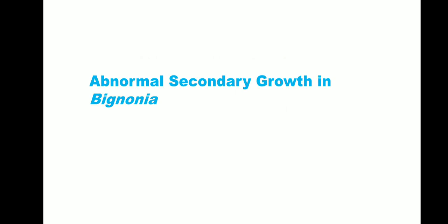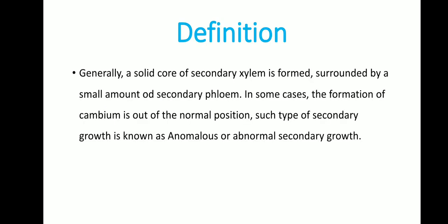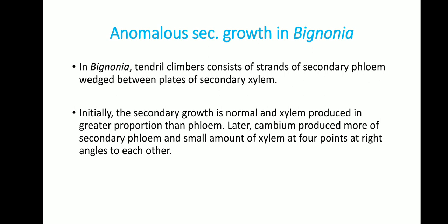Now we will see the abnormal secondary growth. We take a transverse section of Bignonia, which is a dicot plant where secondary growth is abnormal, also called anomalous secondary growth. Generally, a solid core of secondary xylem is formed surrounded by a small amount of secondary phloem, but in some cases the formation of cambium is out of normal position. Such type of secondary growth is known as anomalous or abnormal secondary growth.